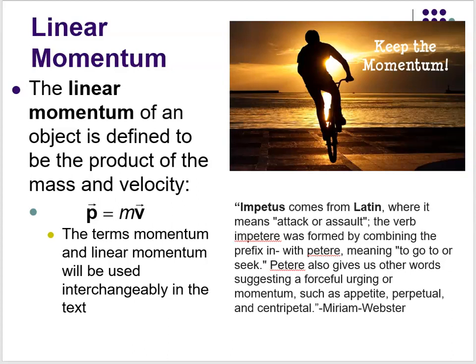The momentum is always going to point in the same direction as the velocity, because mass can never be a negative value. I always wondered why p was used for momentum — it is in every textbook. The obvious reason is that you can't use m for momentum because you're already using m for mass, and it's in the same definition.